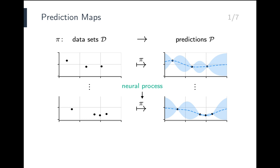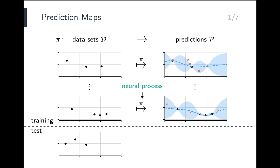Neural processes are a powerful class of parametrizations of these prediction maps. To train a neural process, we consider many small datasets, split every one of them into a context set and a target set, and optimize the probability of the target sets under the predictions. Then, at test time, once a neural process is trained, to obtain a prediction for a test set we haven't seen before, we can simply apply the mapping. The power of neural processes is that at test time they are able to produce fast probabilistic predictions for unseen data.